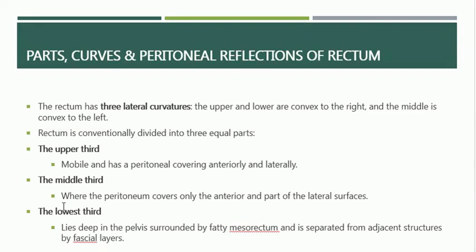These fascial layers are very important and I will discuss them in the next slides. The upper one-third and middle one-third are within the peritoneum, and the lower one-third of the rectum is extraperitoneal. This is very important in many aspects such as injuries — we determine whether the injury is extraperitoneal or intraperitoneal. Lower third injury is usually extraperitoneal.